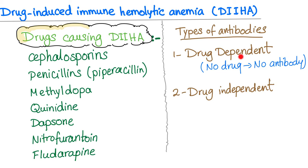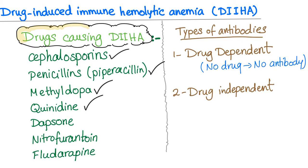Most common will be drug-dependent antibodies — these antibodies are only detected in the presence of the drug; no drug, no antibodies. Less commonly, drug-independent antibodies — such antibodies do not need the drug to be present to obtain in vitro reactions; one example is Fludarabine. Examples of drug-dependent antibodies include Penicillin and Cephalosporin. We will elaborate on four of these: Cephalosporin, Penicillin, Methyldopa, and Quinidine.